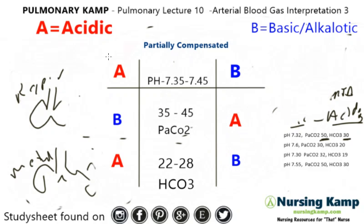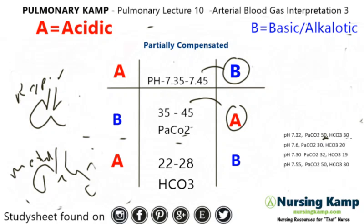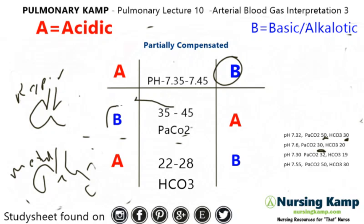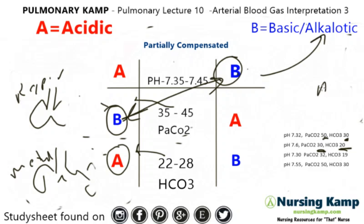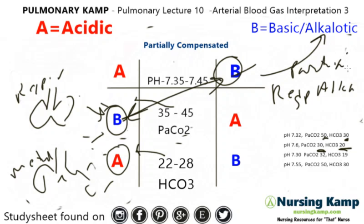The next one: the pH is 7.60 — it's outside the box, so you circle there. The PaCO2 is 30, so it's outside also. Circle that one. The bicarb is 20, which is less than 22, so we circle that. They're all on the outside. We connect the two together — we know this is an alkalotic condition, and it's in the respiratory area. Because everything is on the outside, it's partially compensated respiratory alkalosis.